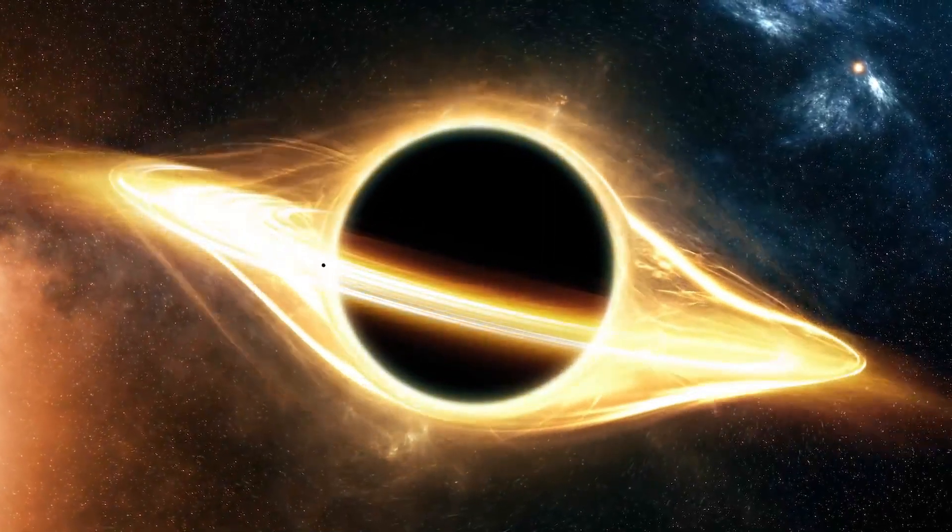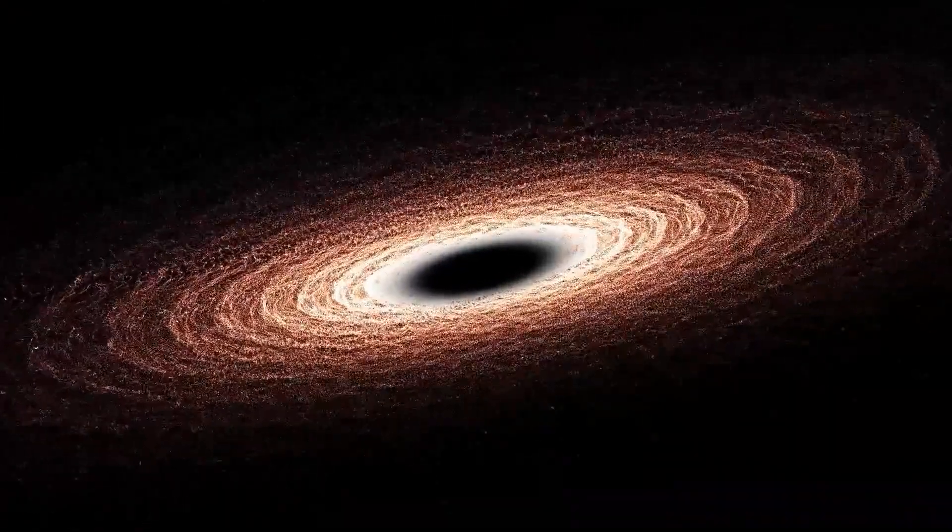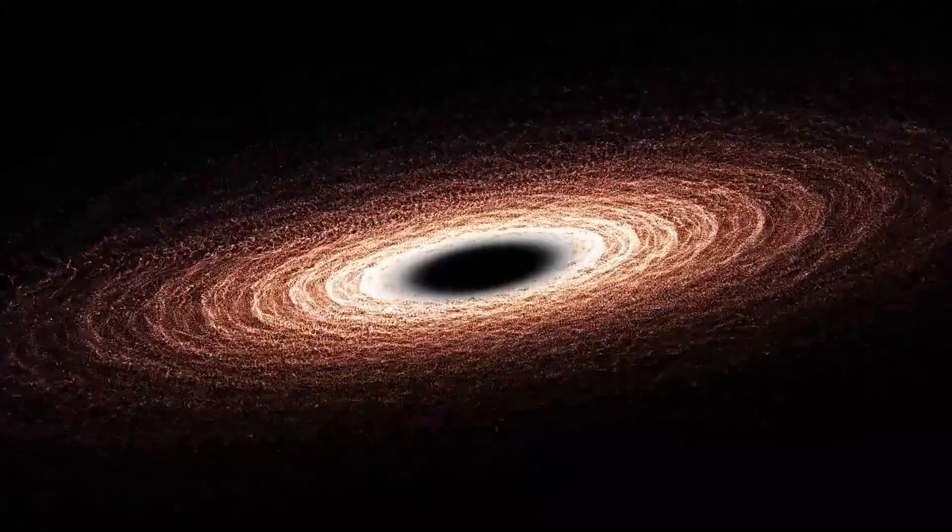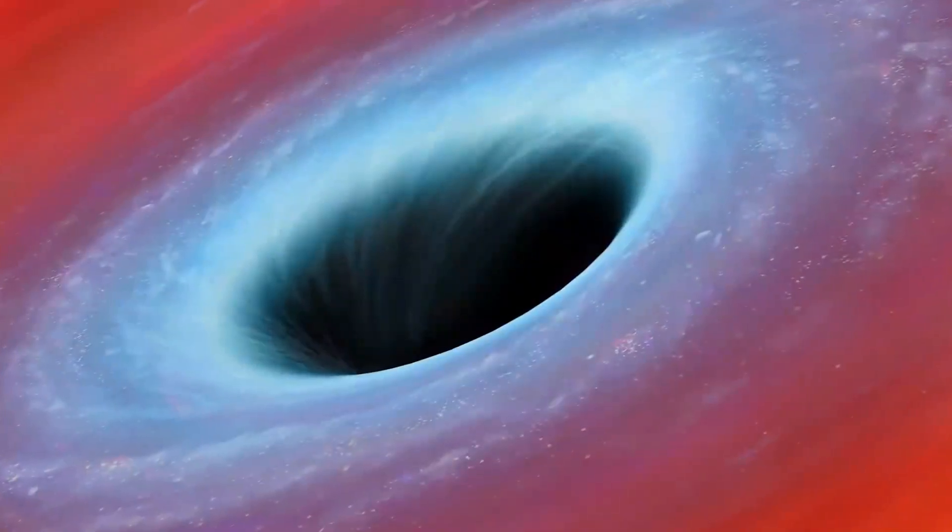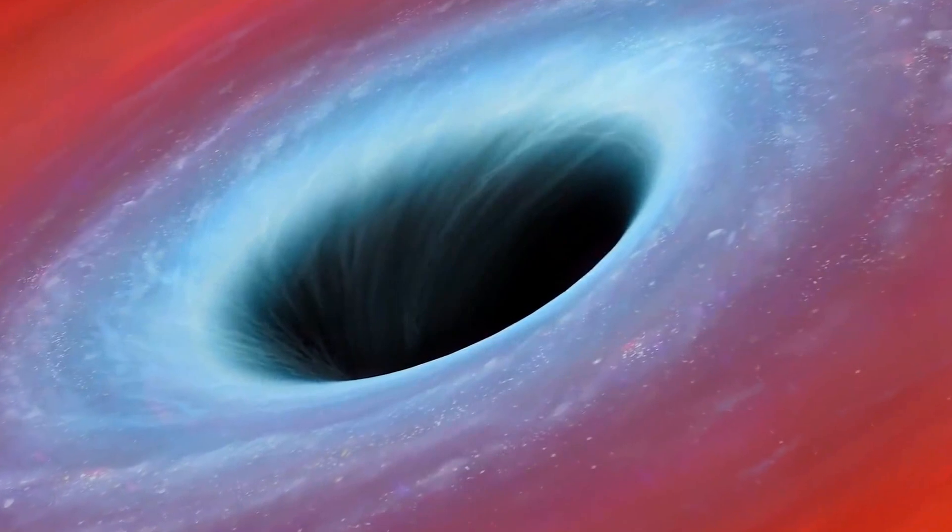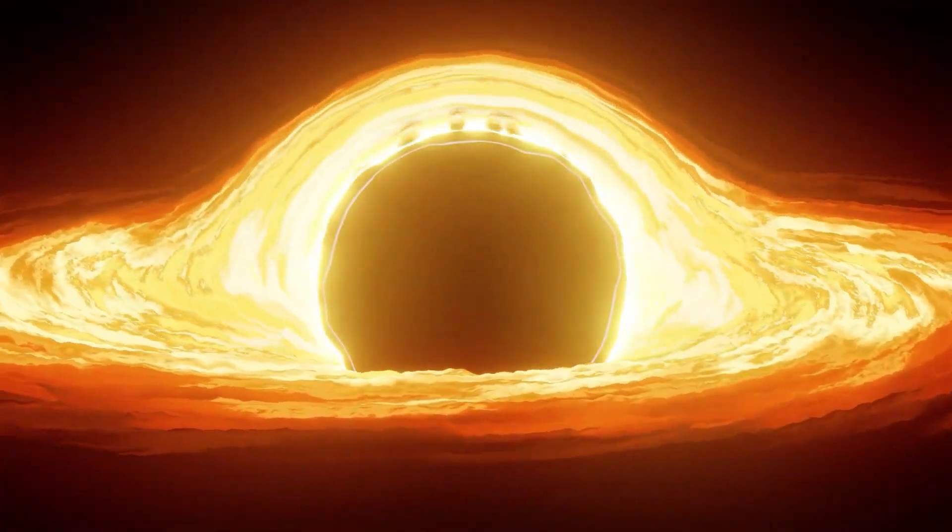The event horizon, which surrounds the singularity, is the point of no return for everything that enters a black hole. After an item passes the event horizon, it is imprisoned and cannot escape the black hole. The event horizon determines a black hole's size and mass, which is proportional to its mass.